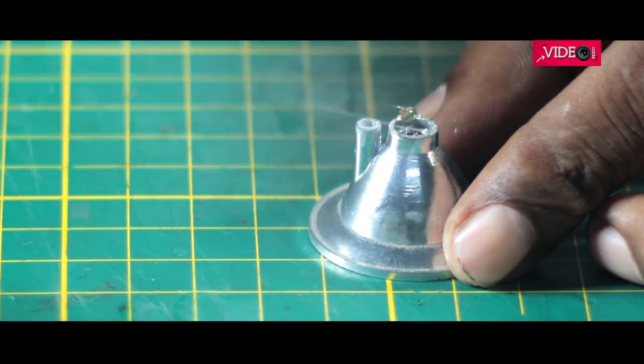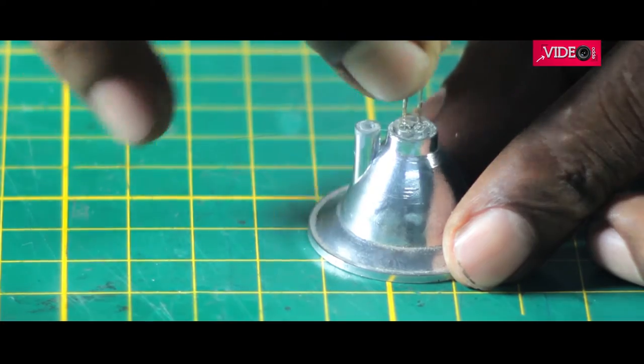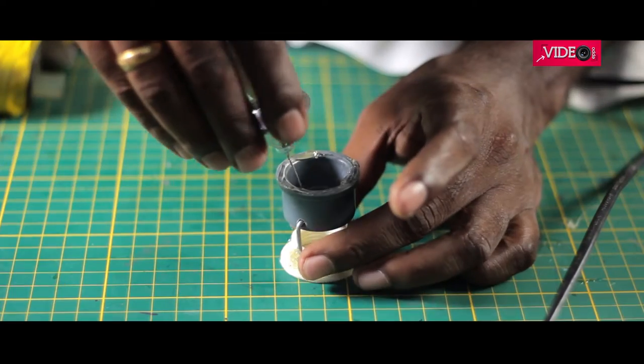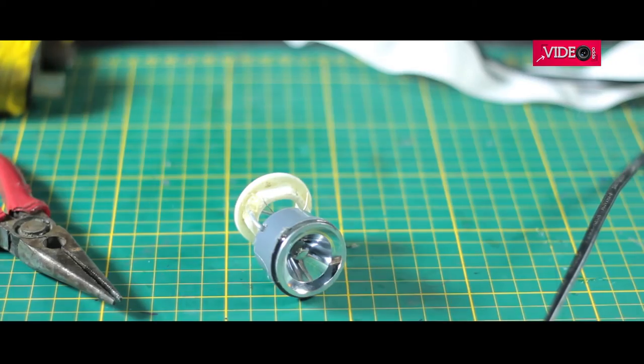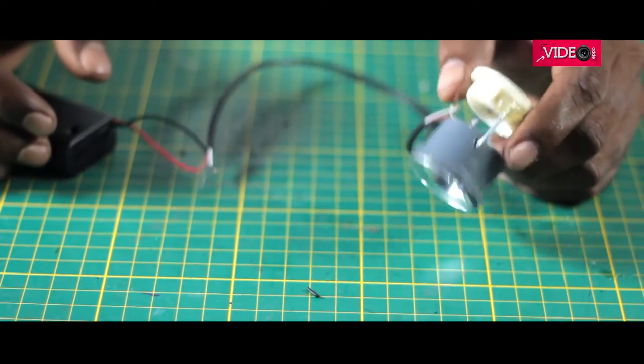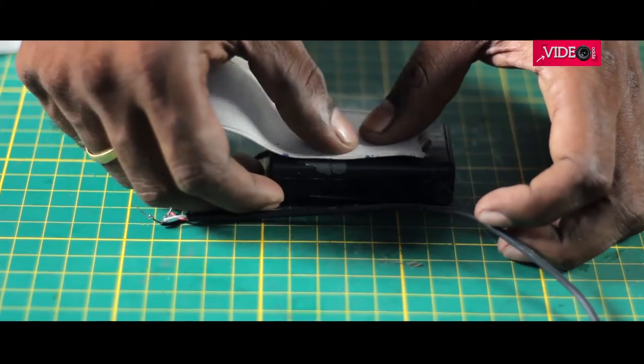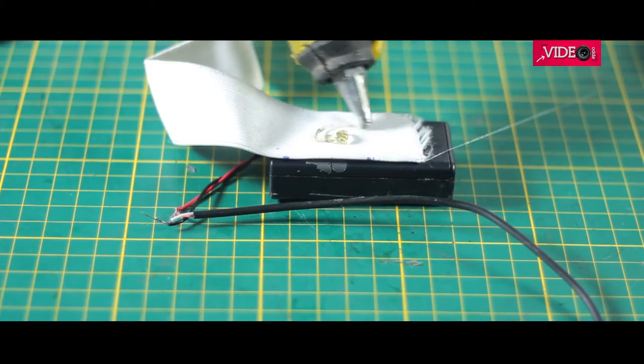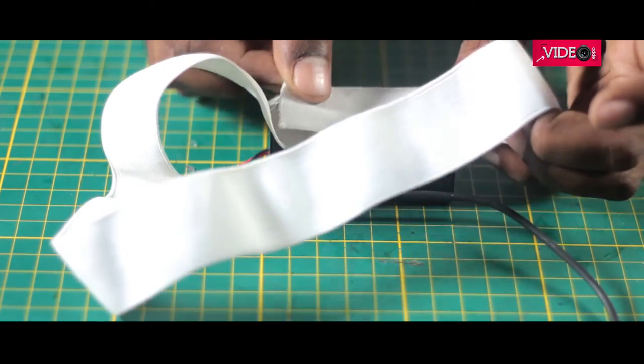I then added a dab of hot glue onto the torch reflector and inserted a 3 volt LED. Then I fixed it on top of the dummy. This makes the light part of the headlamp. Once the connections were soldered, I quickly checked it. I used the leftover elastic from my previous DIY VR headset to stick it onto the battery pack.